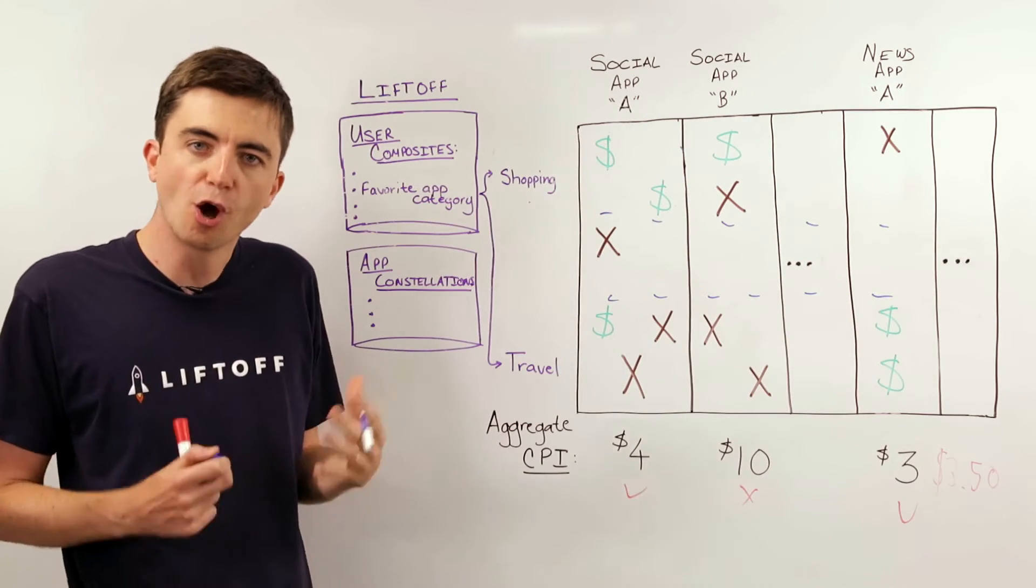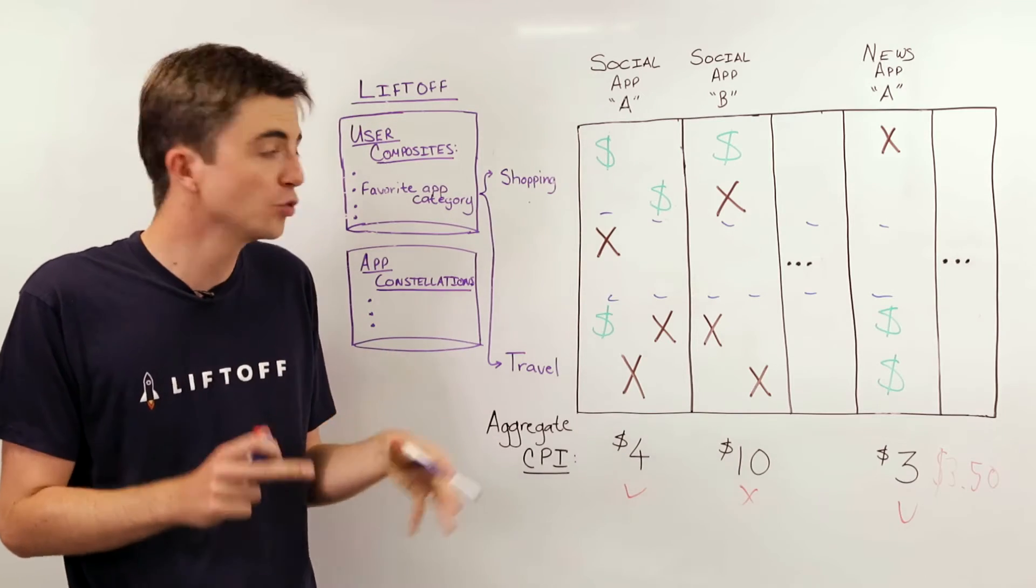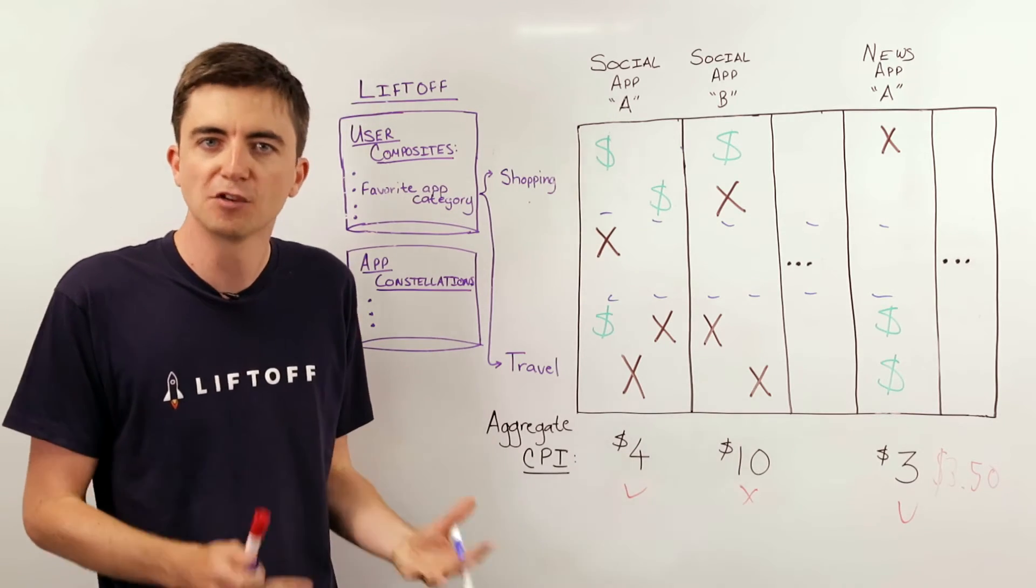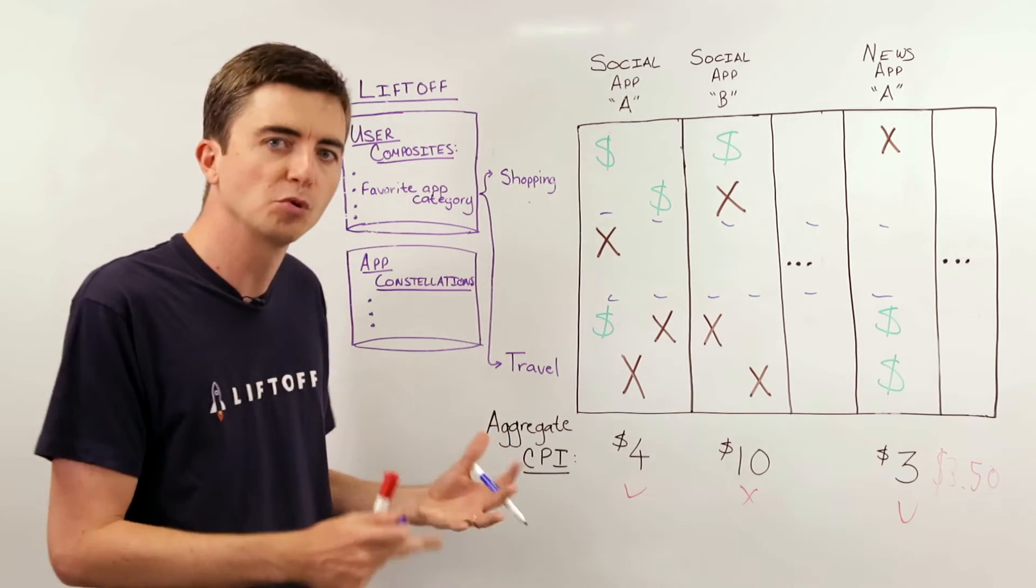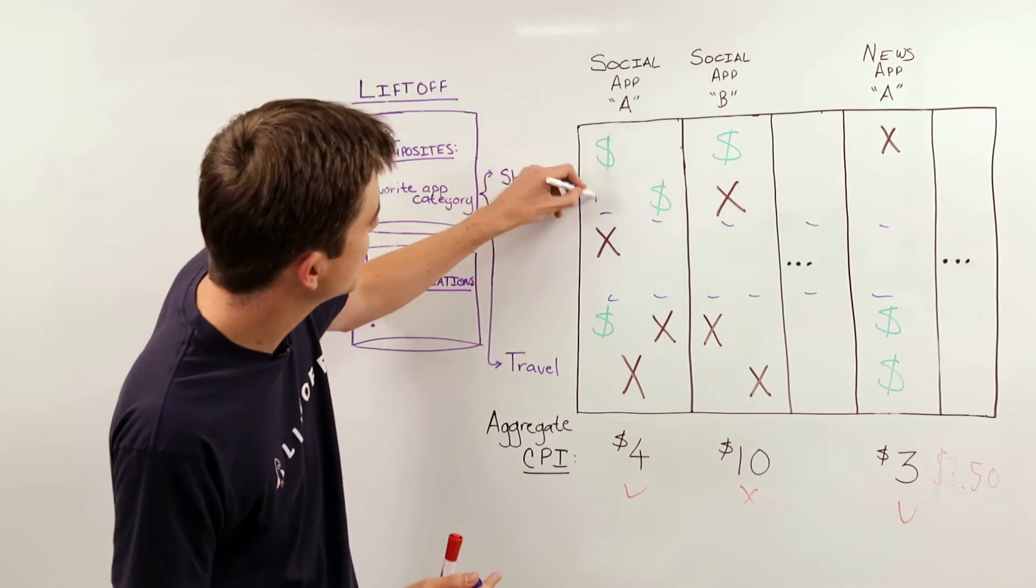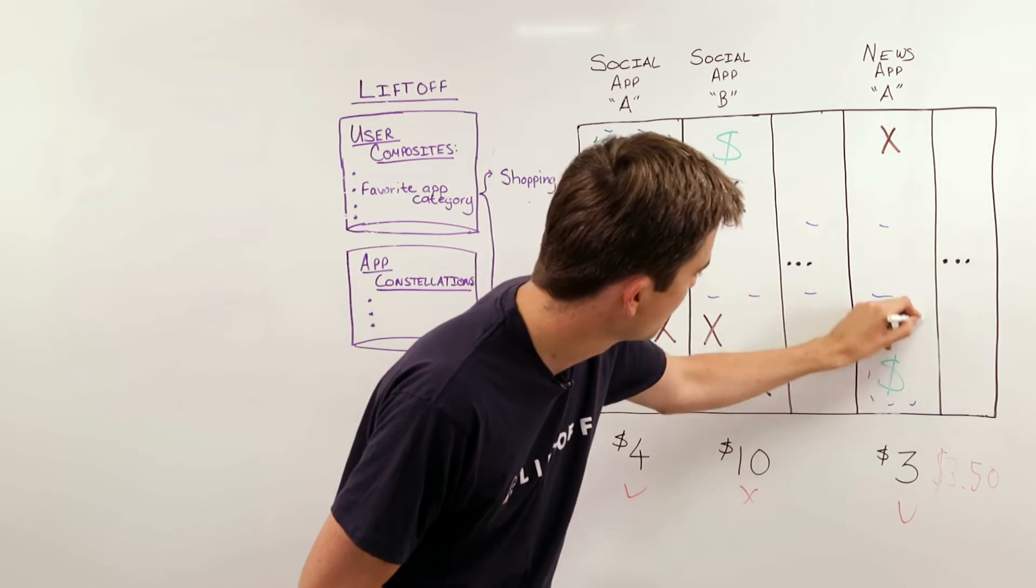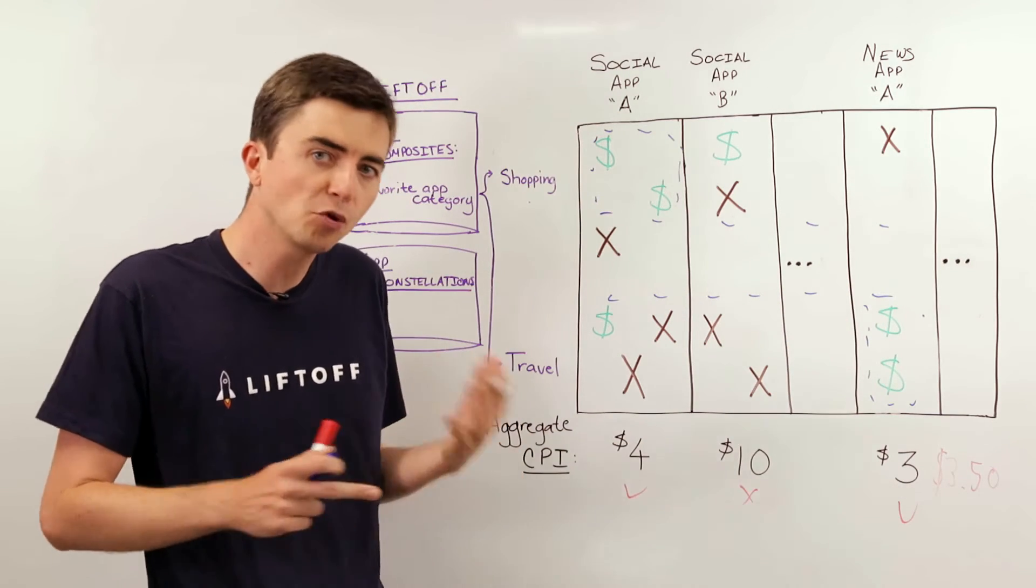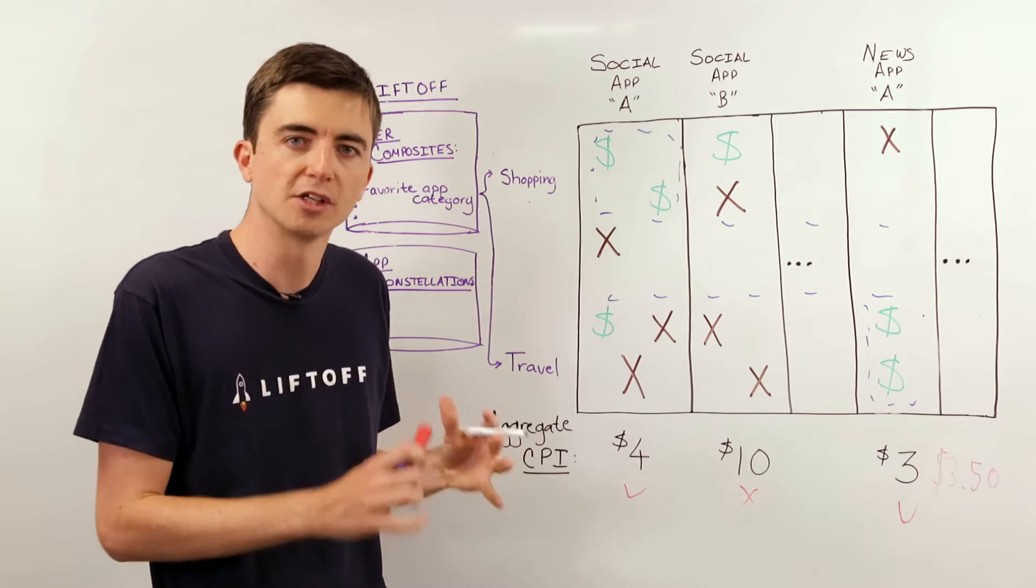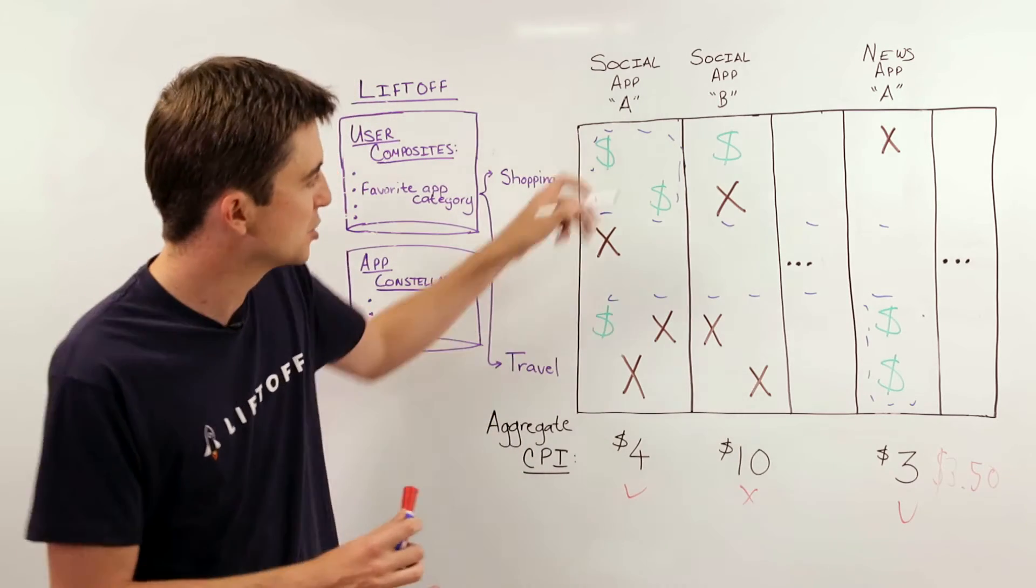And that allows us to hone in on subsets of users within each application that have the highest probability of converting to your application, and therefore will drive the best CPIs. So in this case, for example, this subset and this subset. And it even allows us to tap into applications that otherwise would have very poor aggregate CPI for your app, such as this one.